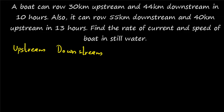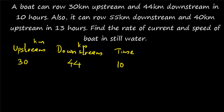The upstream distance, downstream distance, and total time are given. Let me write this as a table. First case: the boat rows 30 kilometers upstream and 44 kilometers downstream, and the total time taken is 10 hours. Second case: 55 kilometers downstream and 40 kilometers upstream, and the total time taken is 13 hours.